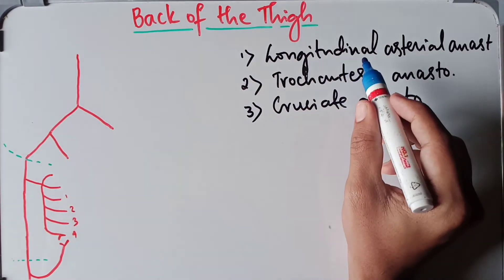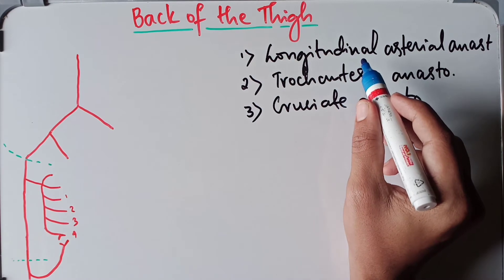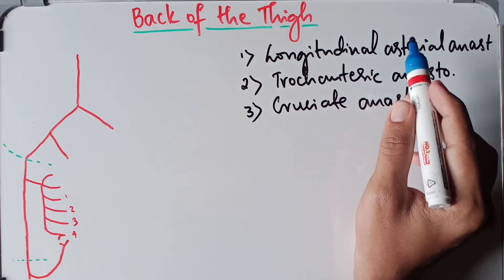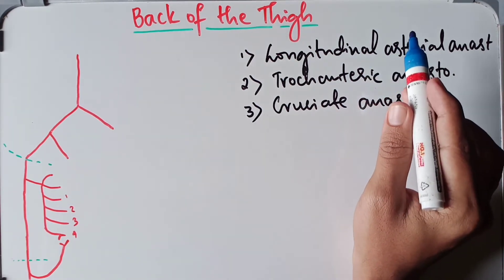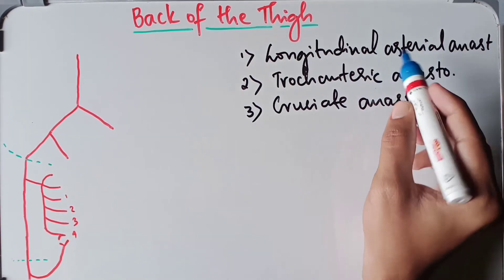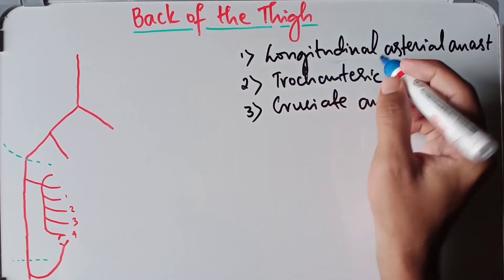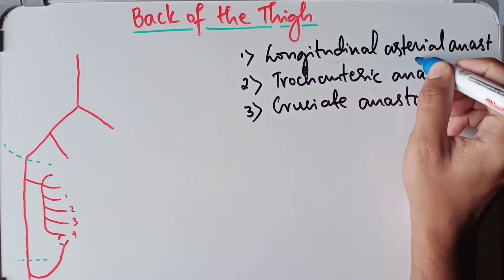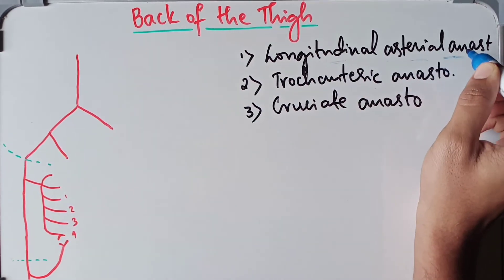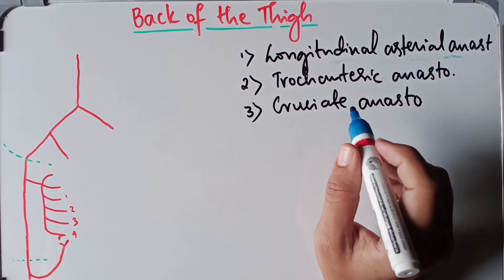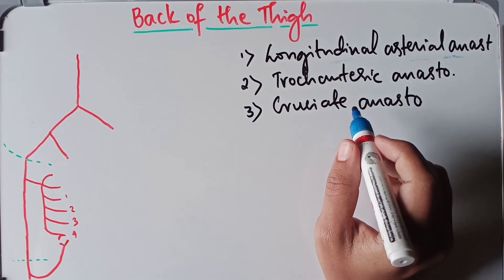When it comes to the longitudinal arterial anastomosis, this is the main arterial supply on the back of the thigh.